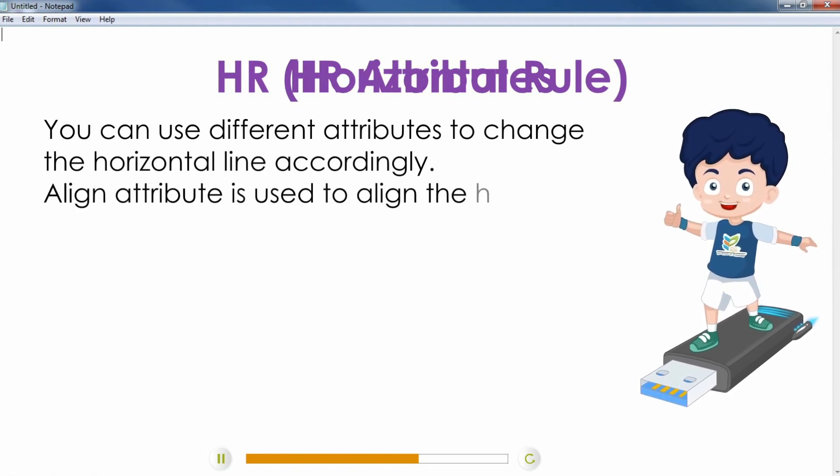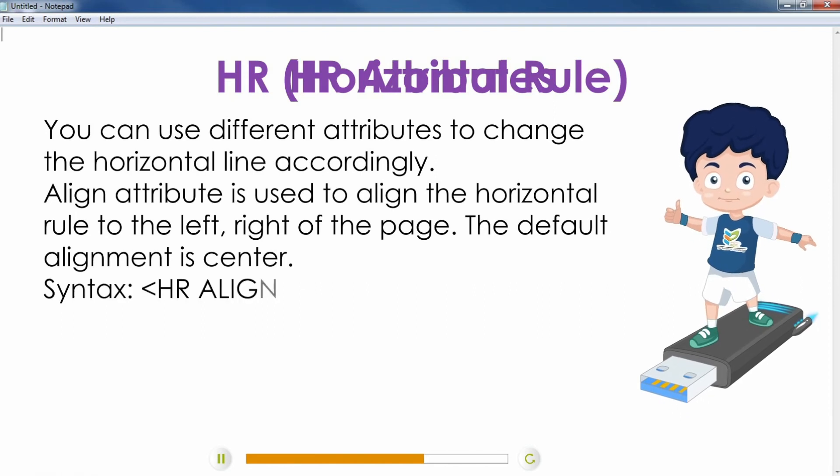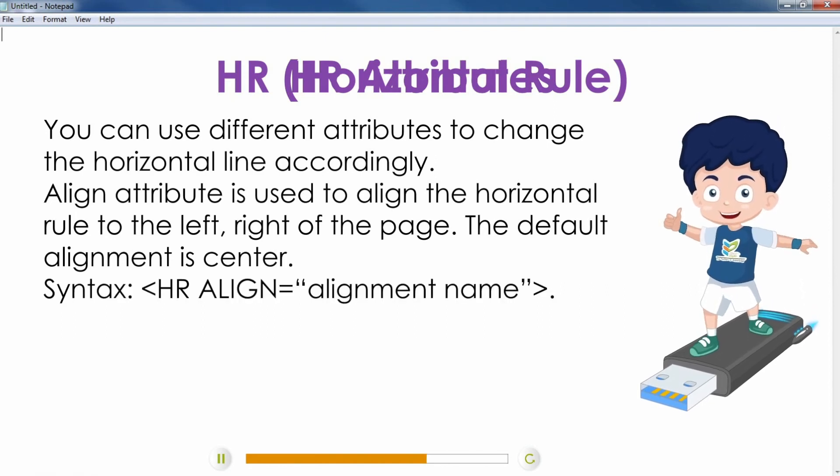Align attribute is used to align the horizontal rule to the left or right of the page. The default alignment is center. Syntax: Hr align equals alignment name.